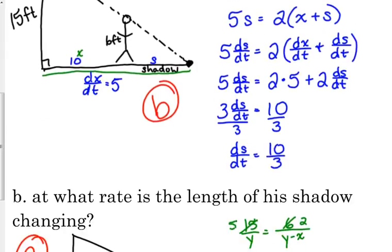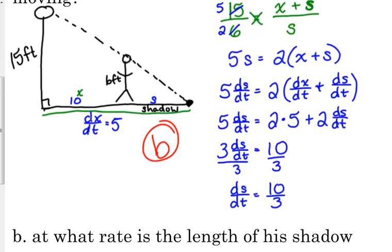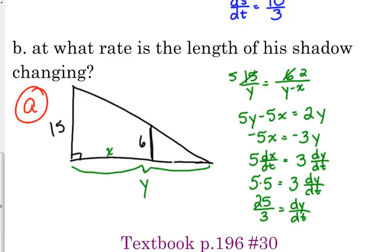...we're talking about Part A - at what rate is the tip of the shadow moving - well, that's talking about the rate of change of this entire distance, because it's the tip of the shadow that's moving. That's that whole distance right there. So we're going to look back and I'm going to get this whole...